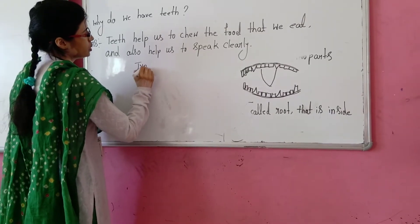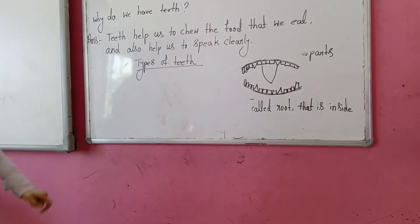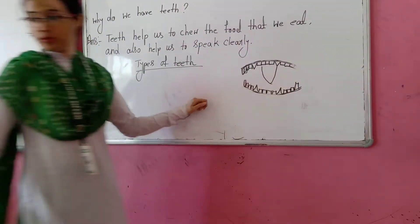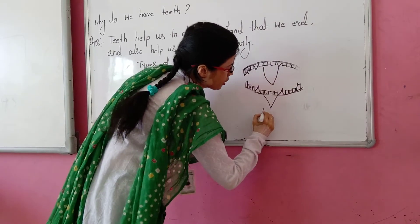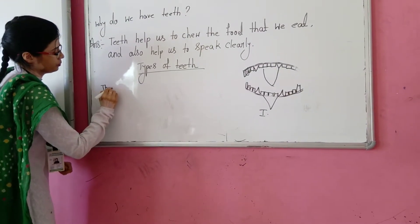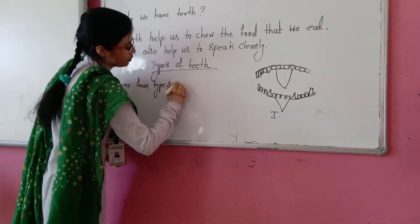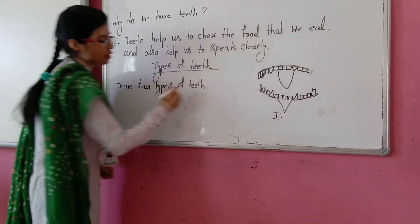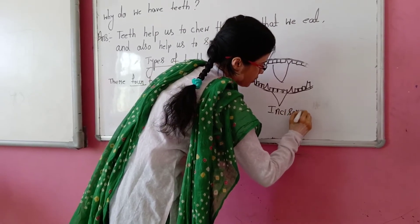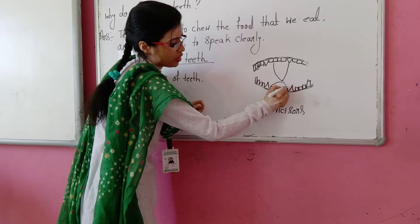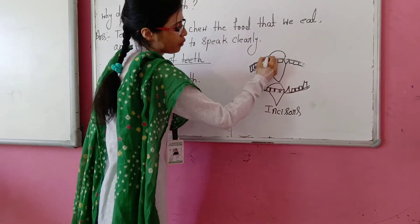Types of teeth. There are four types of teeth. The four front teeth are called incisors. Just like a mirror image — both sides are the same. These four front teeth are called incisors.